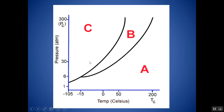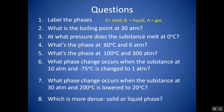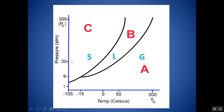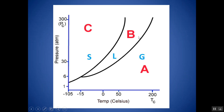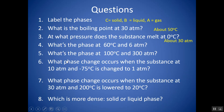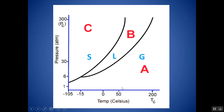Label the phases: going to a point where you'd hit all three, C must be solid, B must be liquid, and A must be gas. What's the boiling point at 30 atm? At 30 atm, the boiling point is on the liquid-gas line; dropping down, that's about 50 degrees. At what pressure does the substance melt at zero degrees? Going to zero degrees on the solid-liquid line and reading across, that would be 30 atm. What's the phase at 60 degrees and 6 atm? At 60 degrees and 6 atm, the substance is a gas.